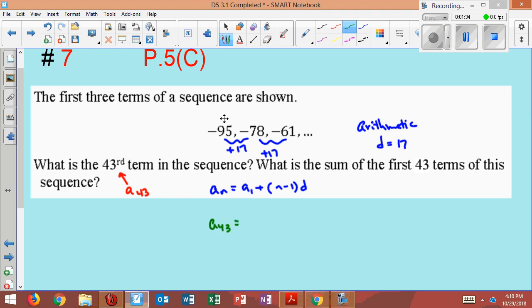A sub n equals A sub 1 plus n minus 1 times the difference. And so A sub 43 will equal A sub 1, which is A sub 1 here, negative 95 plus n is 43 in this problem. So it will be 43 minus 1 times the difference, which is 17.